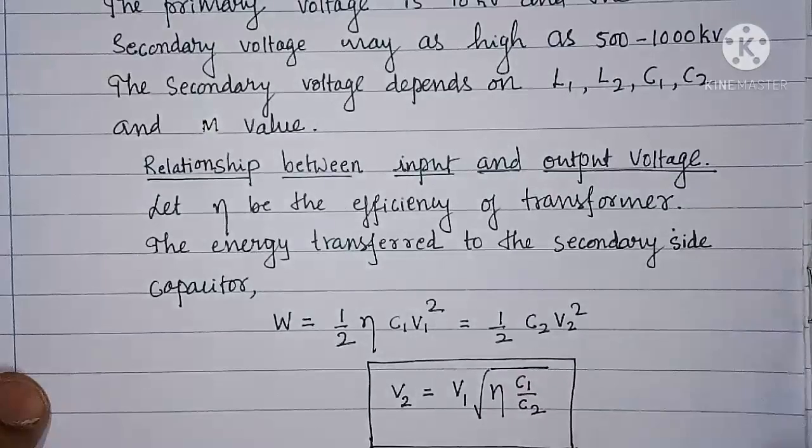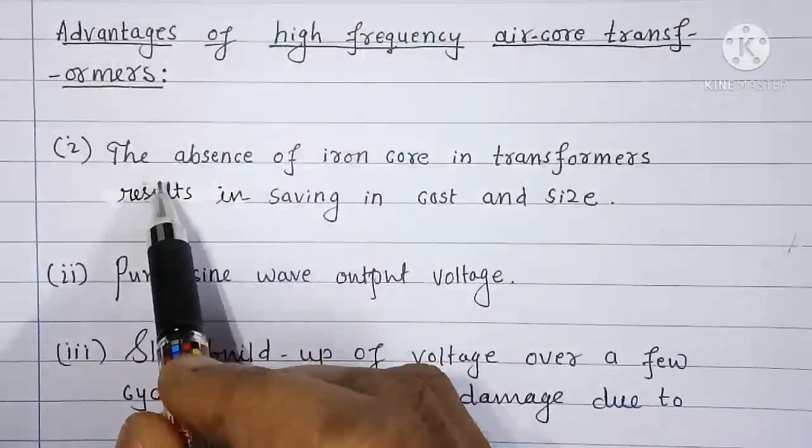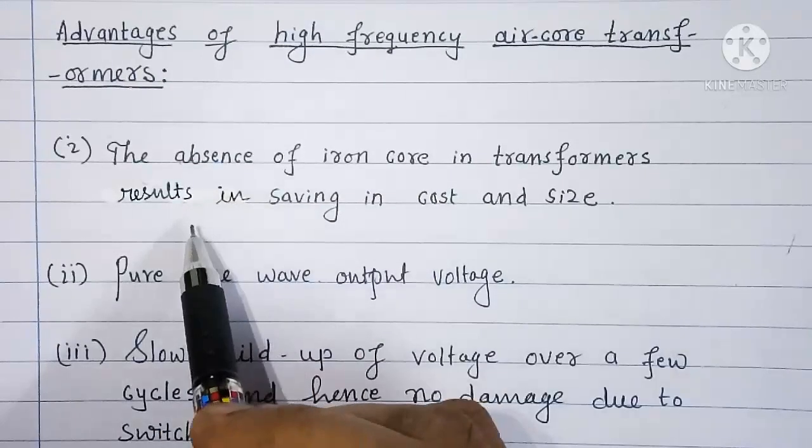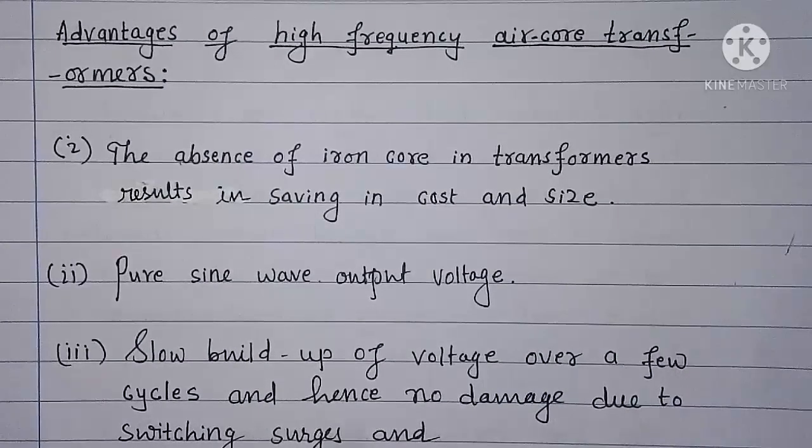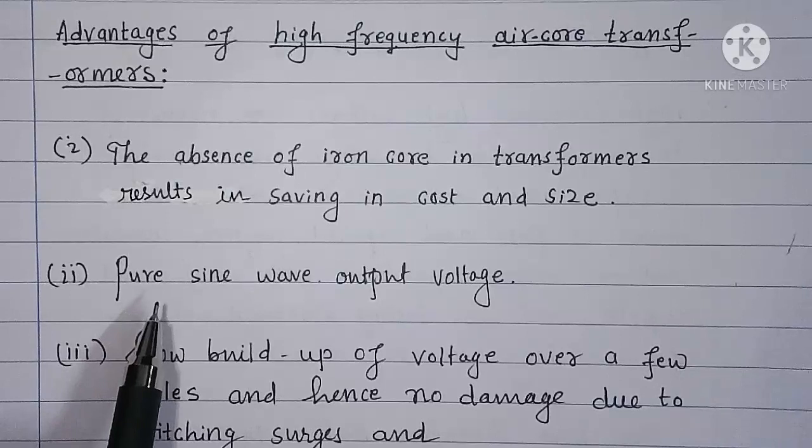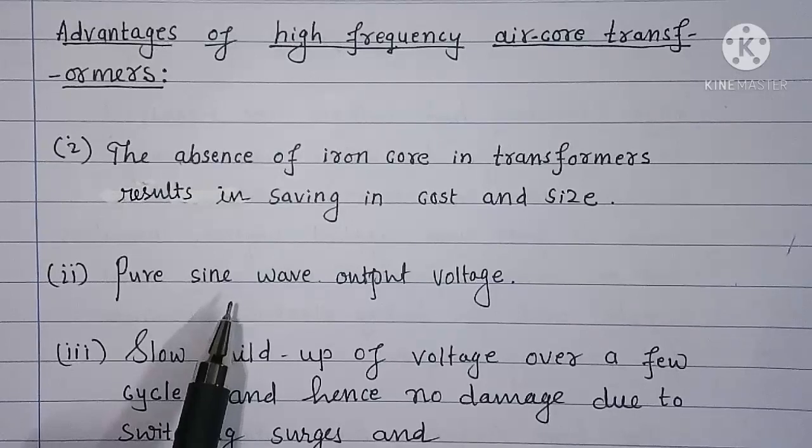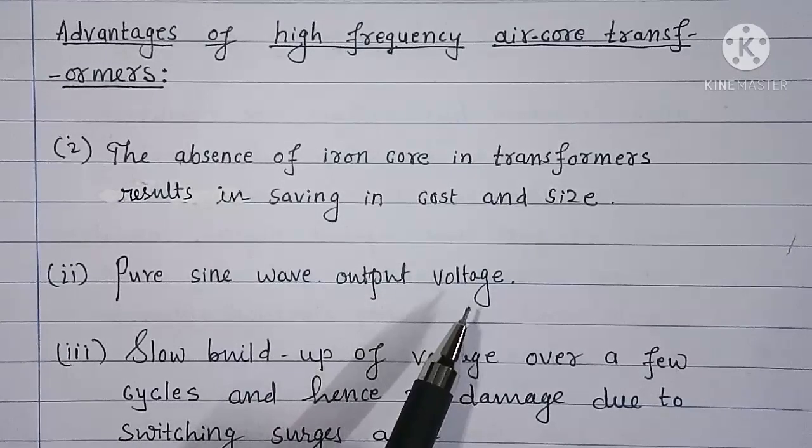Now we will see the advantages of using high frequency high voltage air cored transformers. The first advantage is the absence of iron core in transformers results in saving in cost and size. Second one: since there is no iron core no question of saturation of the core arises even at input voltage of 10 kV. Therefore pure sine wave output voltage may be obtained.